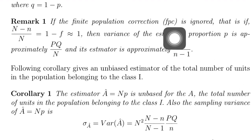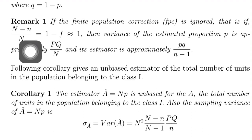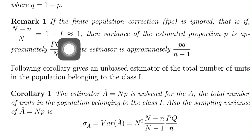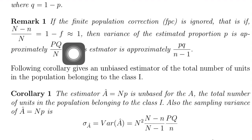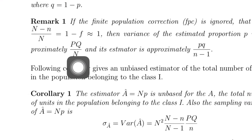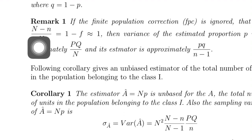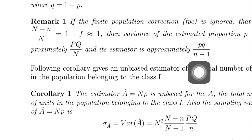A remark on the finite population correction: the term N minus n divided by N equals 1 minus f. If small n compared to capital N is very small — that is, the sampling fraction f is approximately zero — then 1 minus f is approximately equal to 1. In that case, the estimated variance simplifies to approximately p times q divided by n.